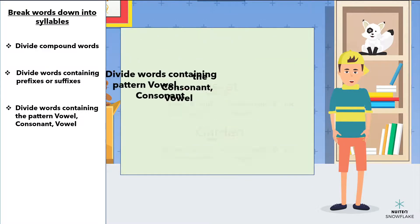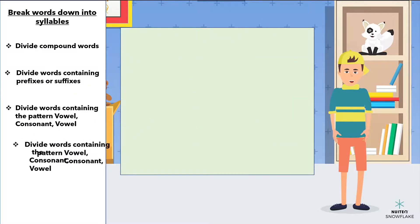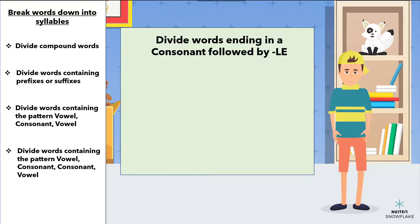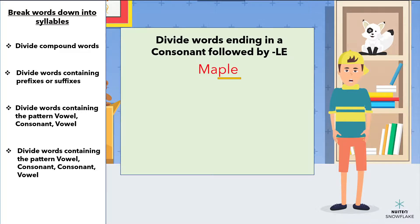Last but not least, there are words that end in a consonant followed by 'le.' Words like 'maple' and 'candle.' To break these words into syllables, divide them right before the consonant that is followed by 'le.' So, 'ma-pul' and 'can-dle.'